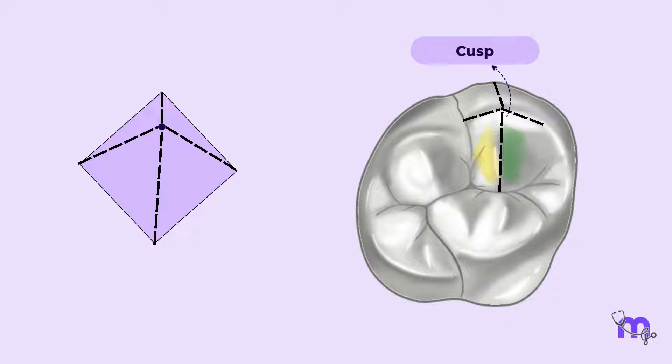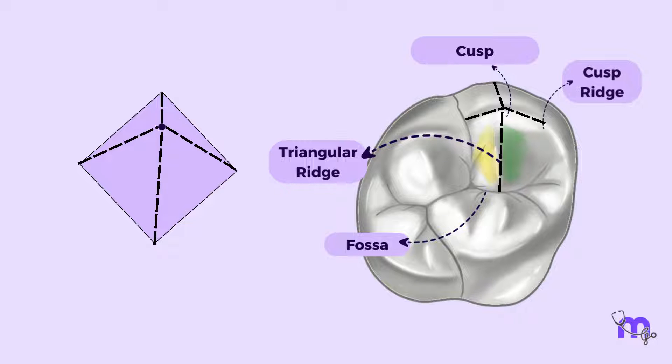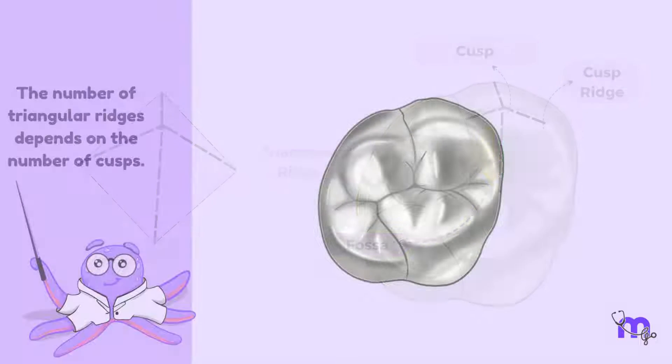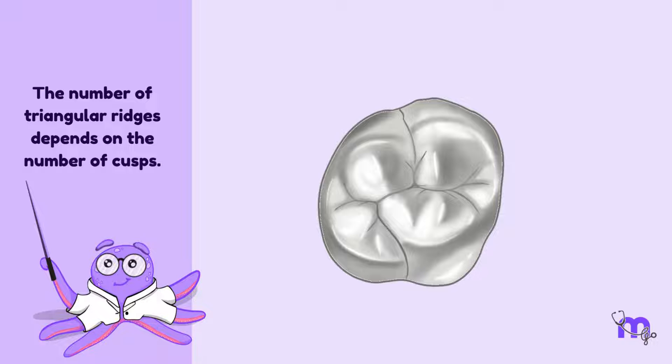The tip has four edges radiating towards the base. If you take one edge, it has two flat slopes. If you cut it, you will find a triangular cross section. This is the triangular ridge. From each cusp, there is usually a triangular ridge going towards the fossa and two cusp ridges going on either side. The number of triangular ridges depends on the number of cusps it has.